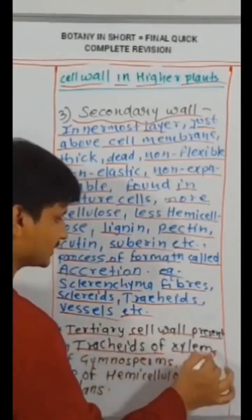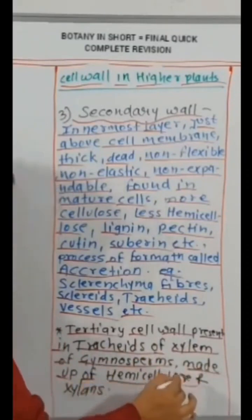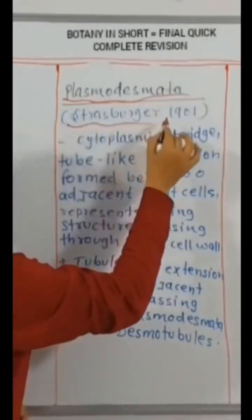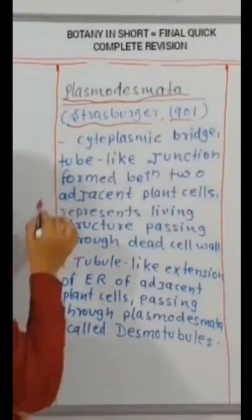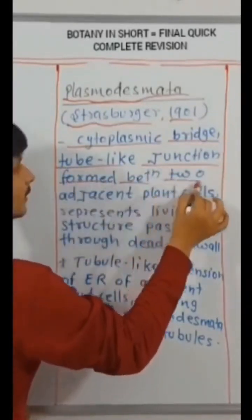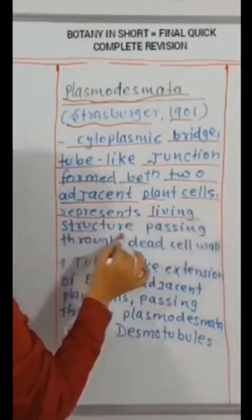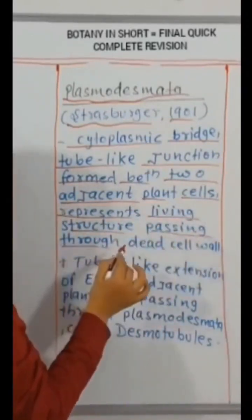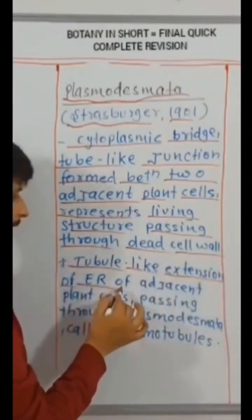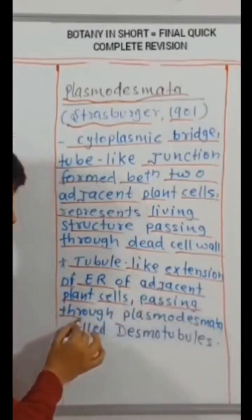Tertiary cell wall present in tracheids of xylem of gymnosperms. Made up of hemicellulose and xylans. Plasmodesmata. Strasburger, 1901. Cytoplasmic bridge.